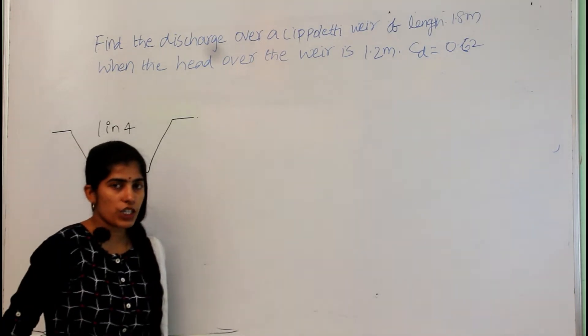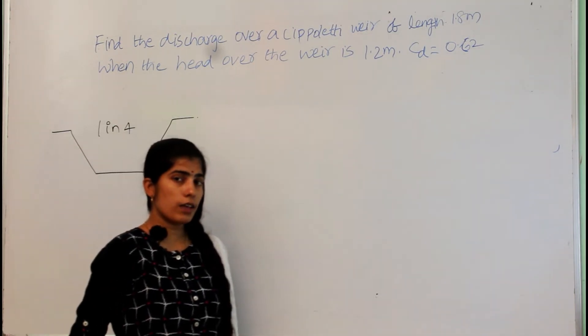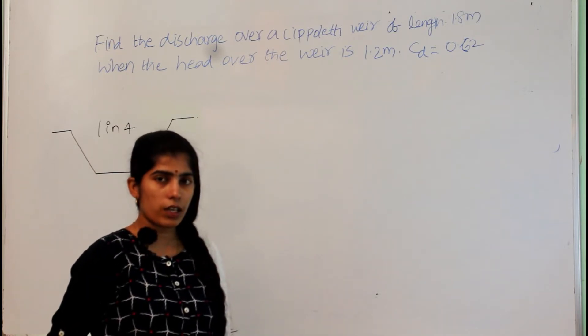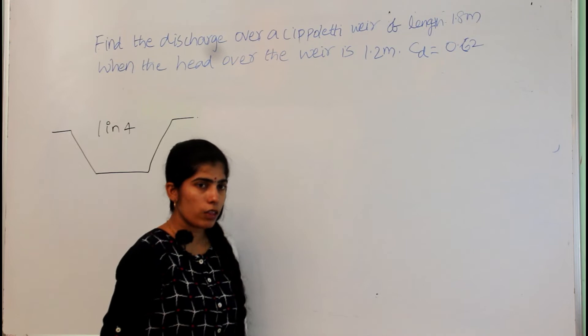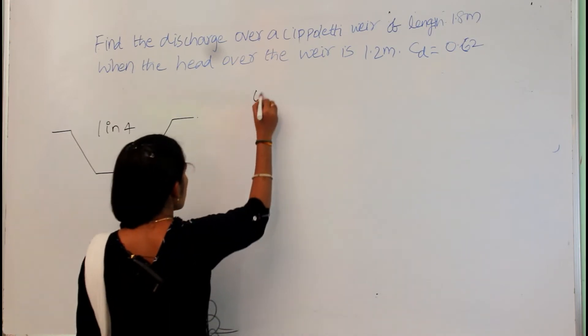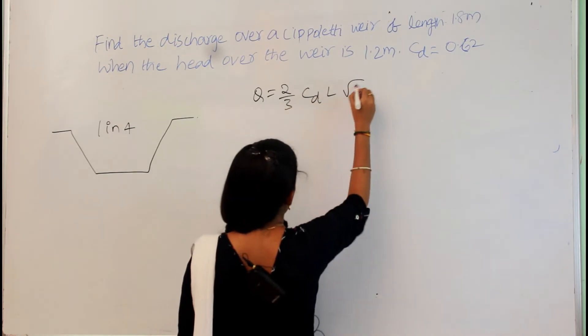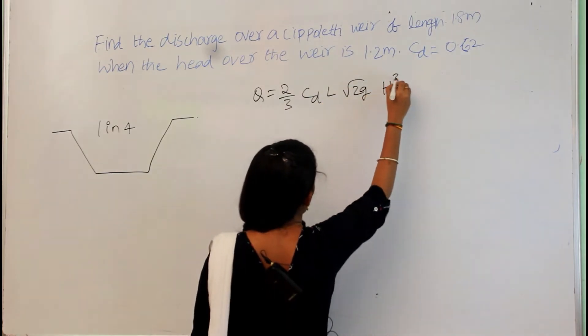So, the discharge equation for the Cipolletti weir is same as the rectangular weir. And what is the discharge for the rectangular weir means we already solved in the previous videos, that is Q equal to 2/3 Cd L root 2g H power 3/2.